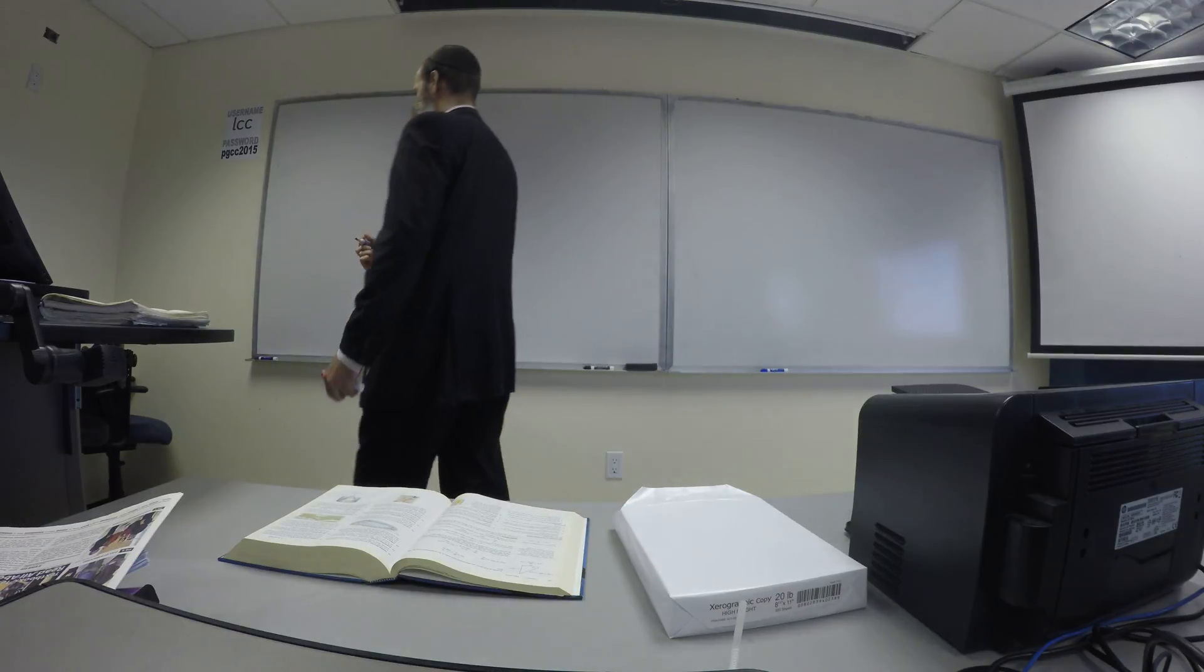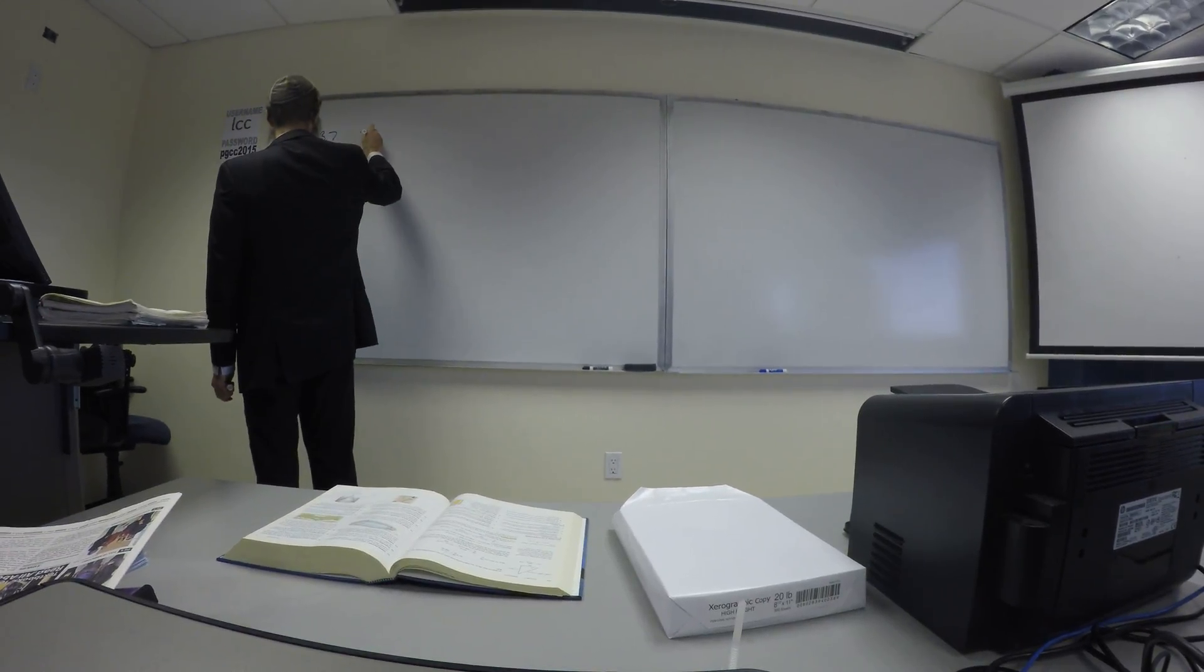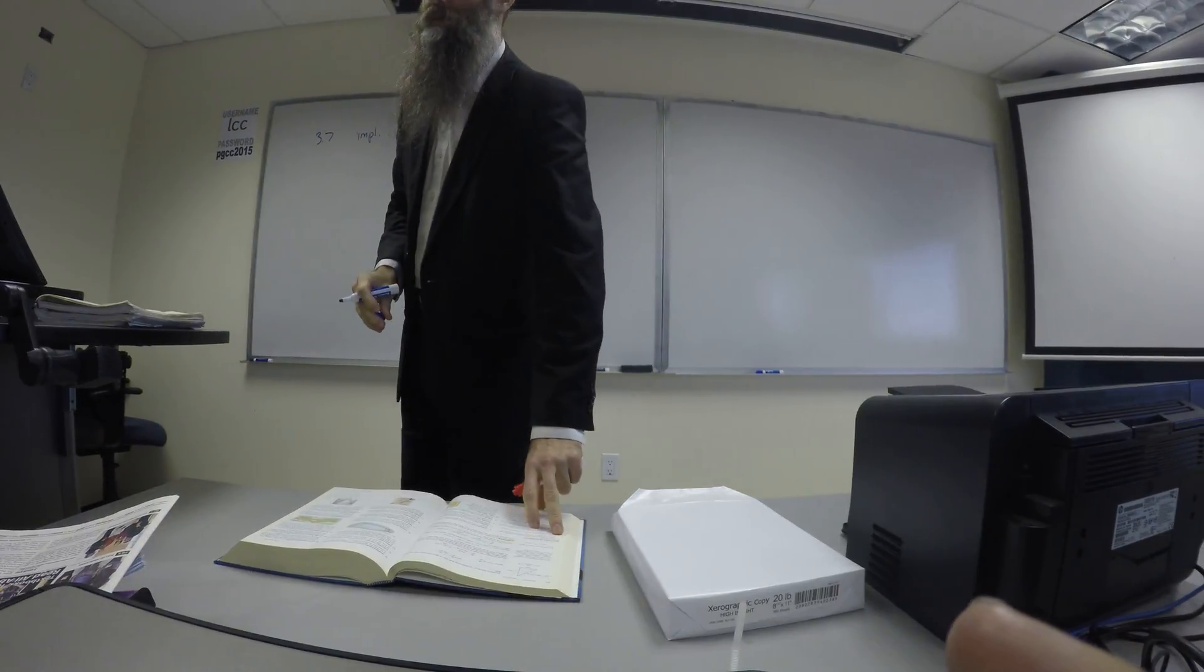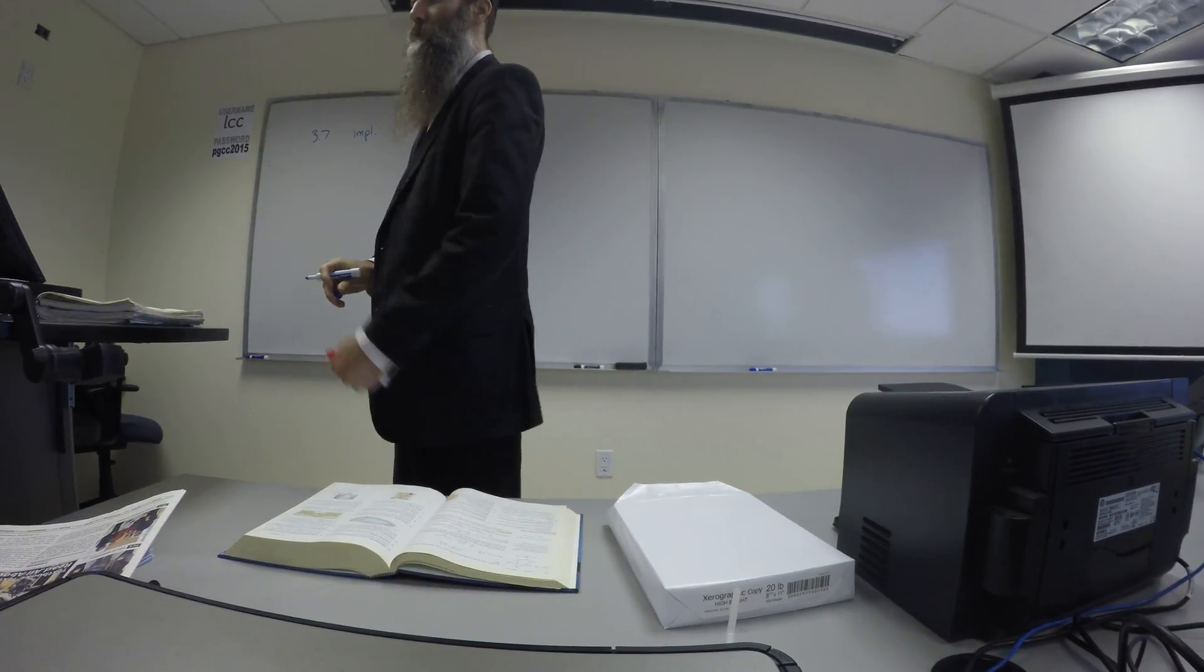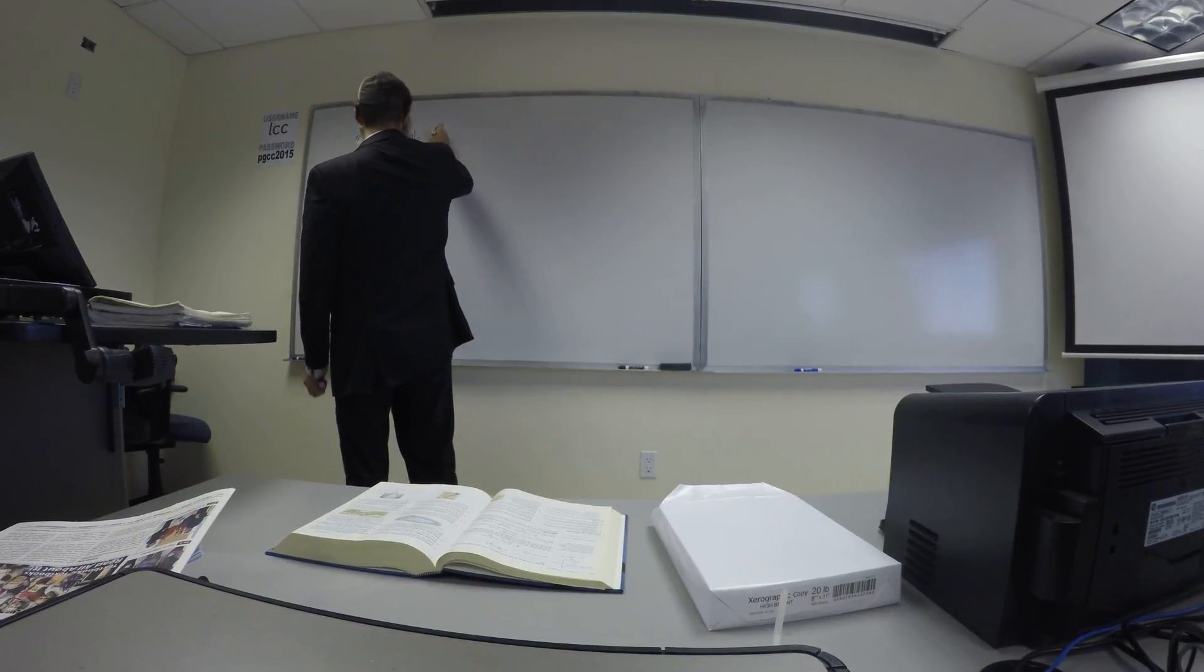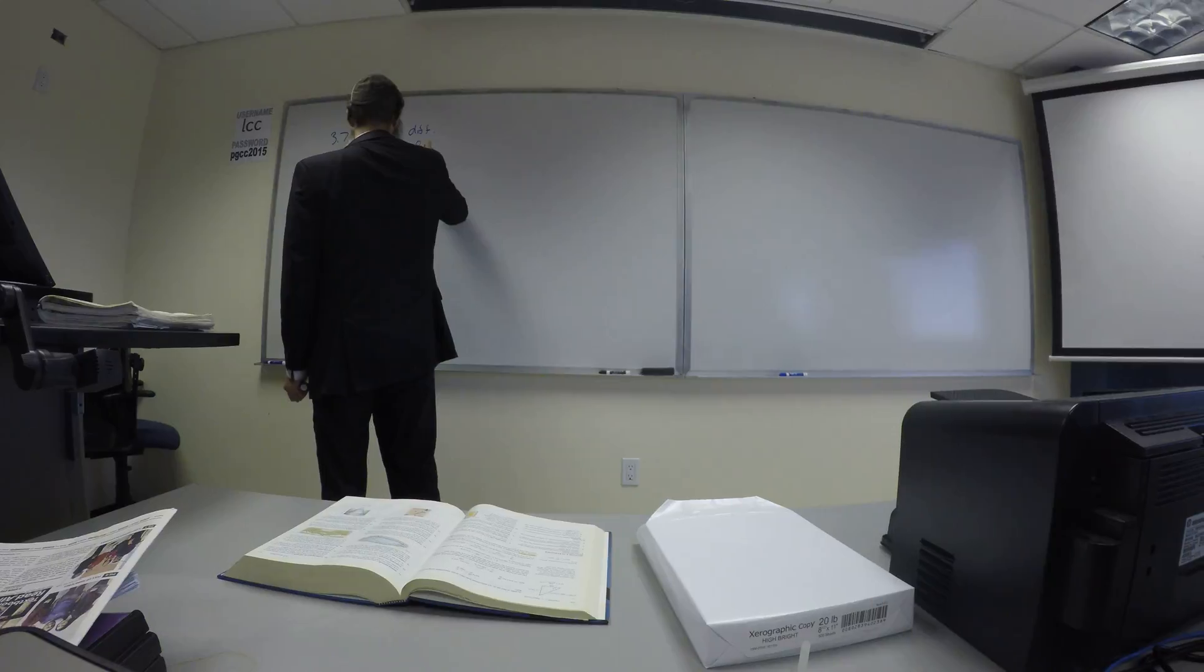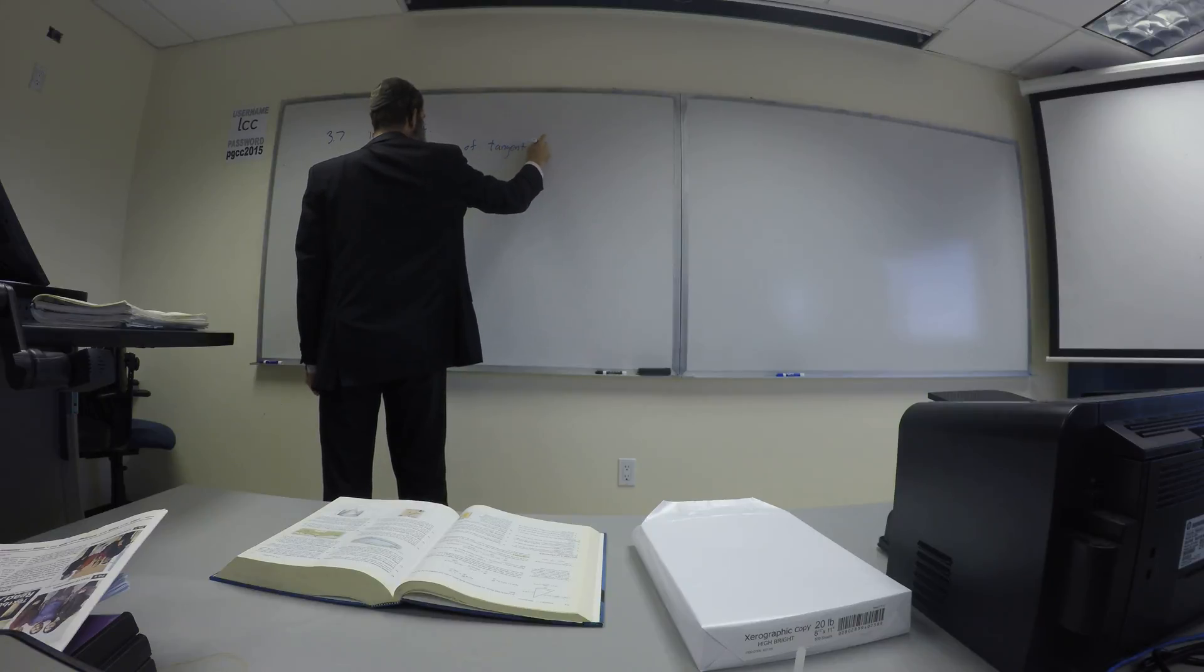It's 3.7. Okay, so implicit, right? Yeah. So it says to write the equation for the tangent line in the M plus B form. Is this online or is this written? It's online. Okay, so implicit differentiation, find the equation of the tangent line. It's number three. Oh, that crazy one?